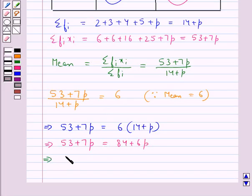This gives us 7p minus 6p is equal to 84 minus 53, that is we have p is equal to 31.